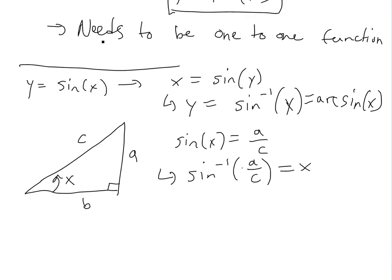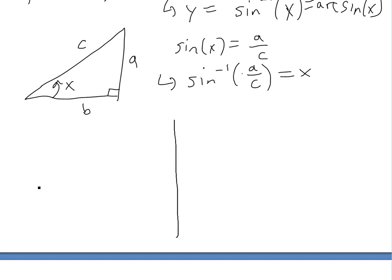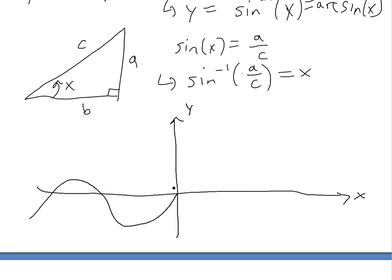But the problem here is it needs to be one-to-one. So if we graph sine of x, it looks like this wave where pi over 2 is here, 3 pi over 2 is here, and 2 pi is here. The problem is it's not one-to-one, because if we draw a horizontal line, it has infinite values.